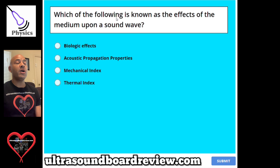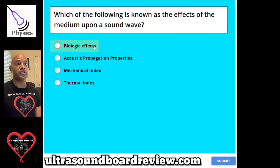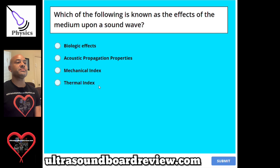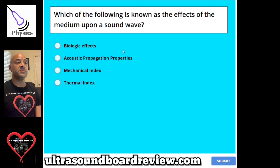Question 107. Which of the following is known as the effects of the medium upon a sound wave? A, biological effects. B, acoustic propagation properties. C, mechanical index. Or D, thermal index? The answer is B, acoustic propagation properties.